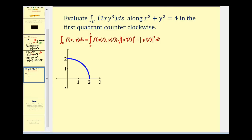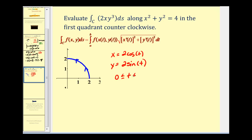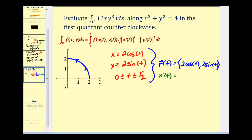Let's take a look at another example. We want to integrate the following function along the curve x squared plus y squared equals 4 in the first quadrant, counterclockwise. So we want to integrate 2xy cubed along that curve. We know points on the unit circle are (cosine theta, sine theta), so for this circle of radius 2 we let x equal 2 cosine t and y equal 2 sine t, with t on the interval from 0 to pi over 2. This gives us R of t equal to (2 cosine t, 2 sine t). We'll also need the derivatives: x prime of t equals negative 2 sine t, and y prime of t equals 2 cosine t.